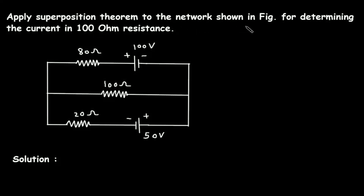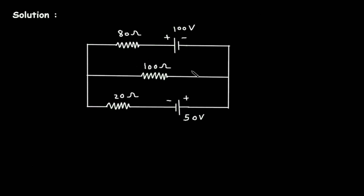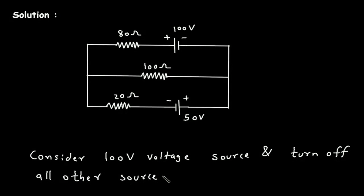Apply superposition theorem to the network shown in figure for determining the current in 100 ohm resistance. We have to determine current through this 100 ohm resistance using superposition theorem. First, we will consider the 100 volt voltage source and turn off all other sources. Since there is only one other source, turning off the 50 volt voltage source means it will be a short circuit.